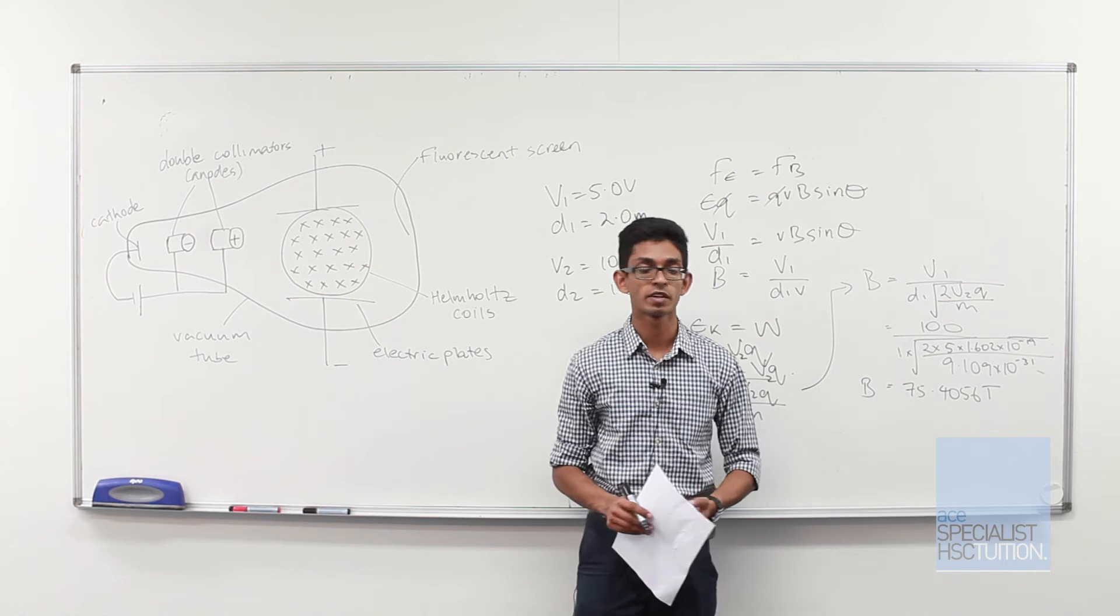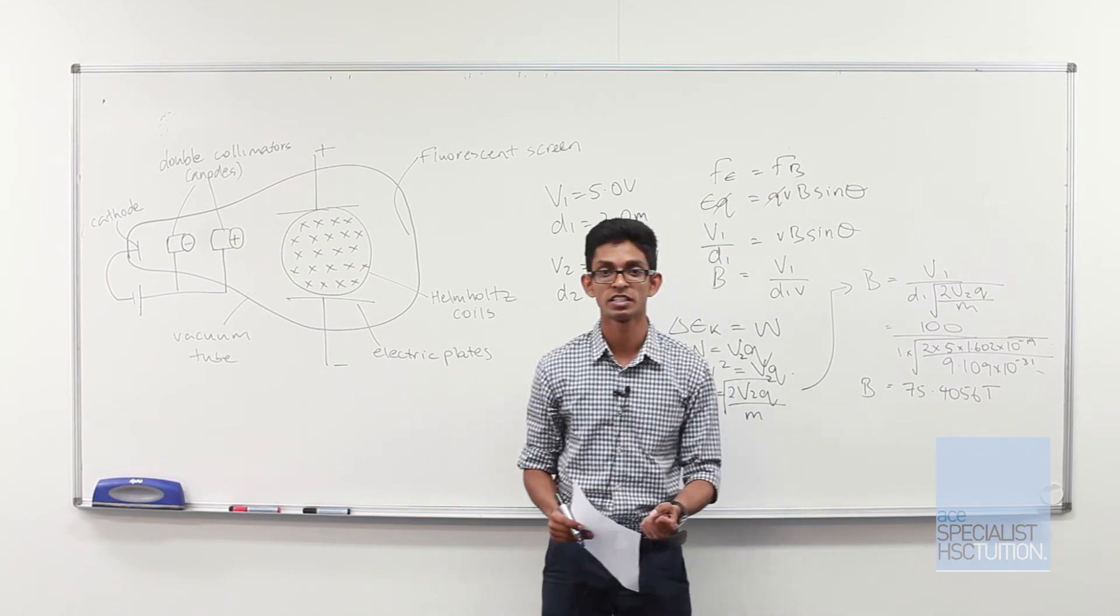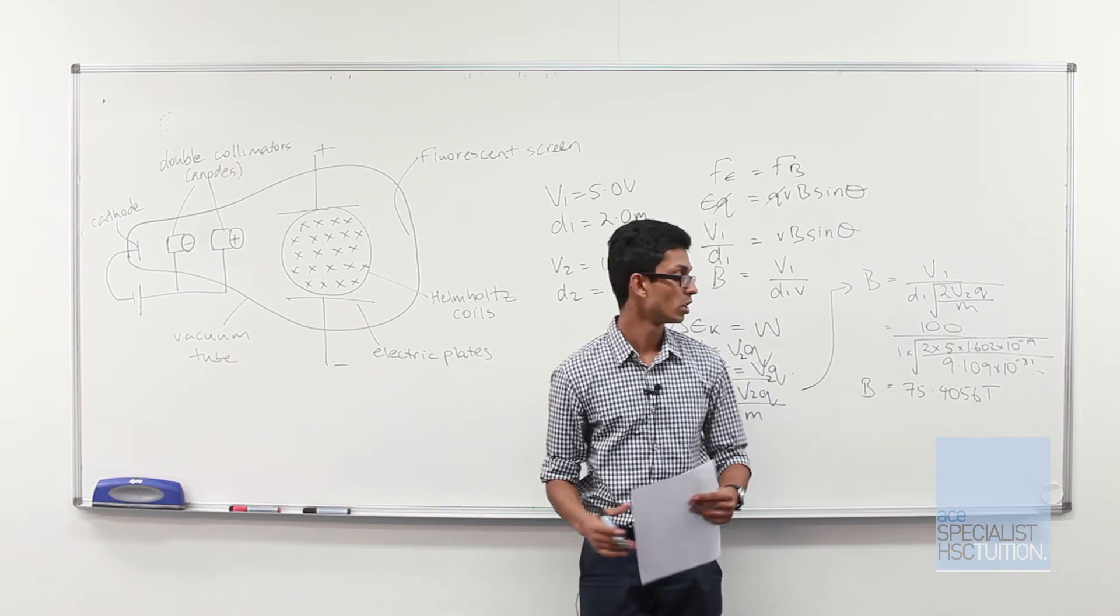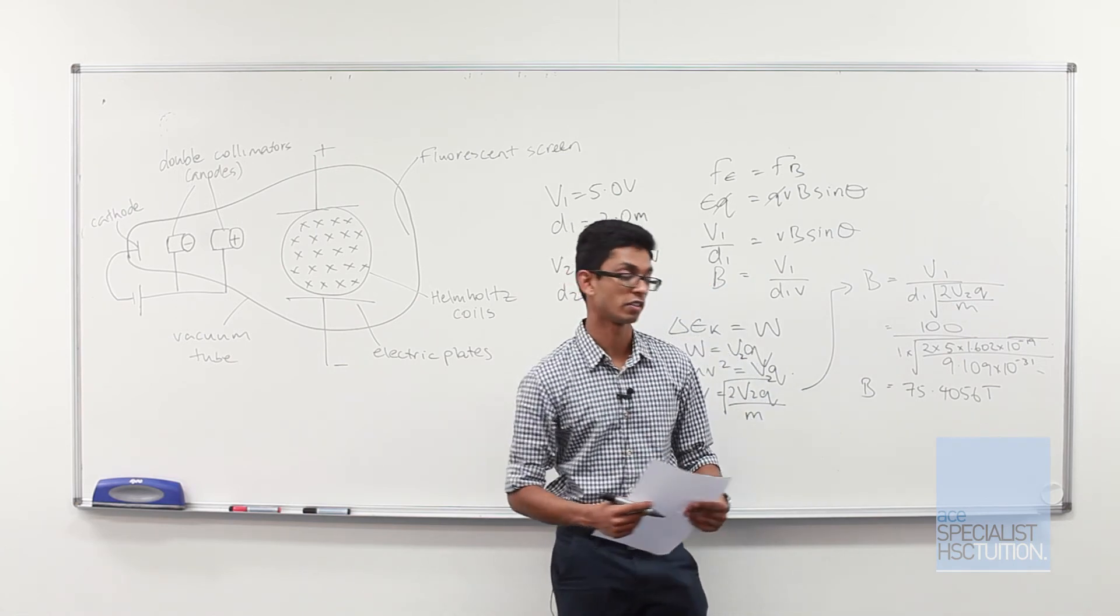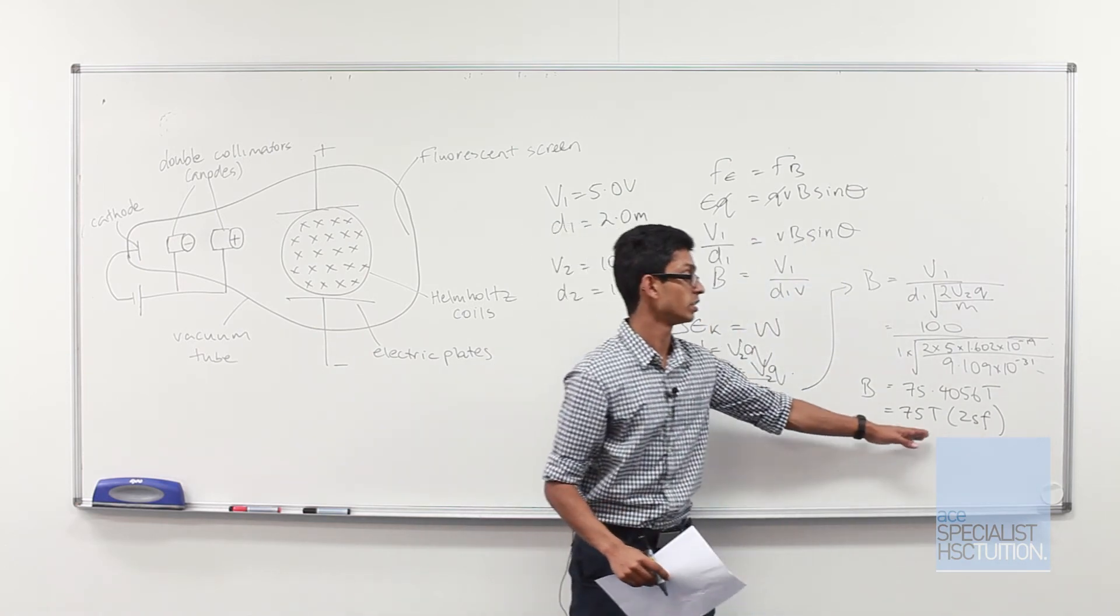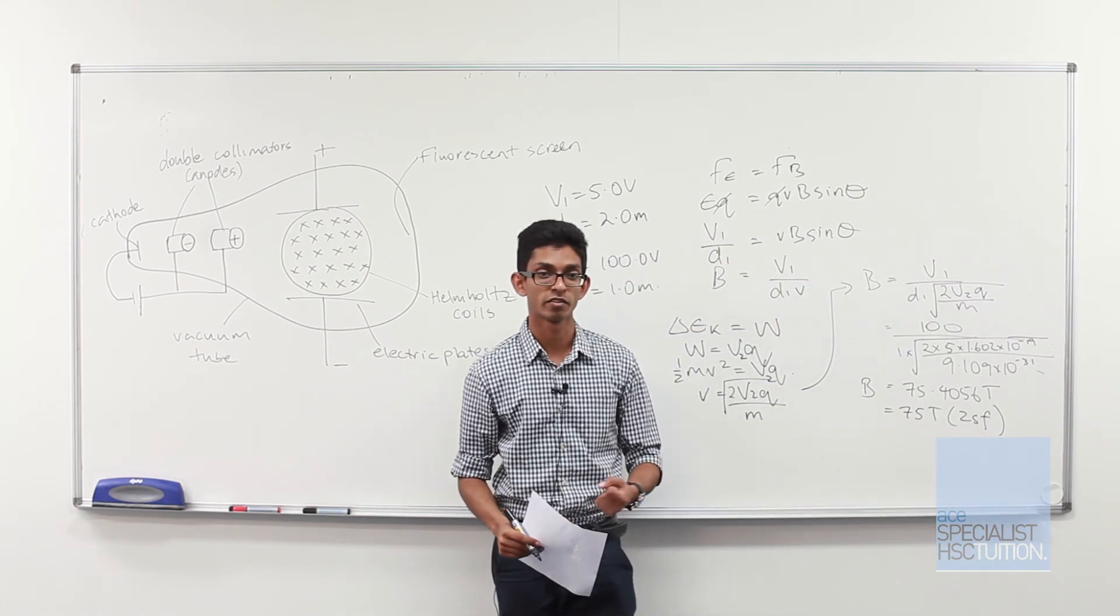However, as with any physics questions, we always need to round to the nearest significant figures. And our lowest number of significant figures here is 2, so we'll round our answer down to 2 significant figures. Always remembering to write down our units and the number of significant figures we have rounded to.